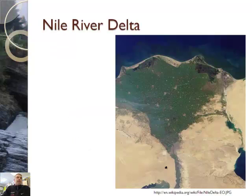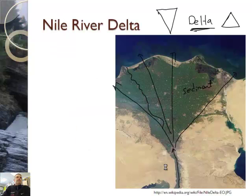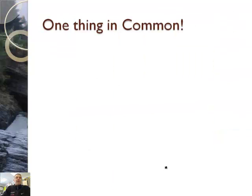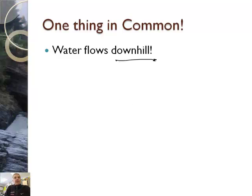So that's what a delta is. Now, one thing that all rivers have in common — and it's probably sort of a duh thing — is that water flows downhill.